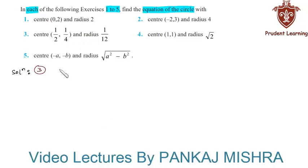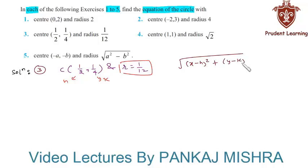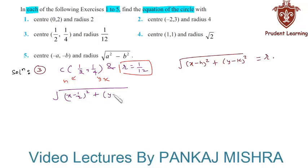In the third question, we are given coordinates of center are 1/2 comma 1/4 and radius of the circle is 1/12. So here h equal to 1/2, k equal to 1/4, and r equal to 1/12. The equation of a circle with center h comma k and radius r is given by the square root of (x minus h) whole square plus (y minus k) whole square equal to r. Substituting the given values, we have the square root of (x minus 1/2) whole square plus (y minus 1/4) whole square equal to 1/12.